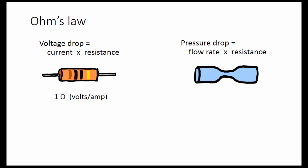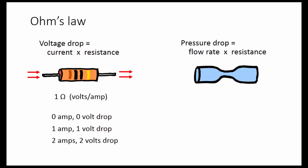This resistor has a resistance of 1 ohm, or 1 volt per amp. If there's no current flowing through it, there's no voltage drop. If 1 amp flows through it, there's 1 volt drop. If there are 2 amps flowing through, there's 2 volts drop.